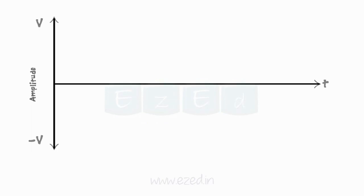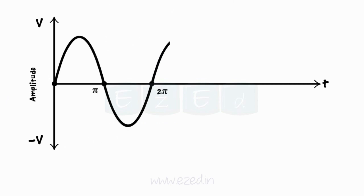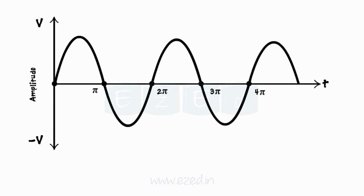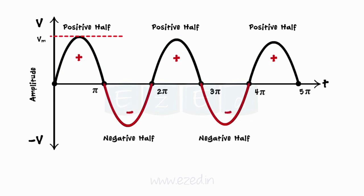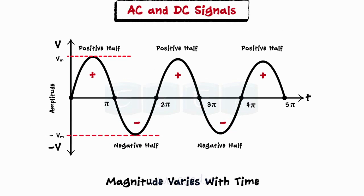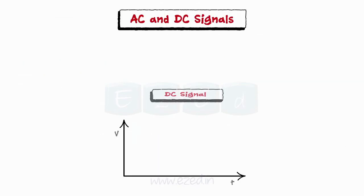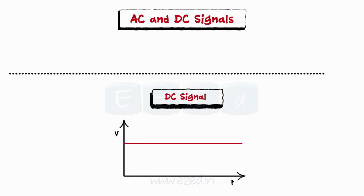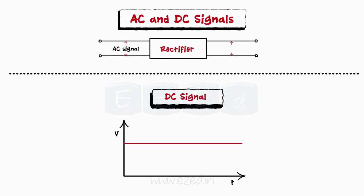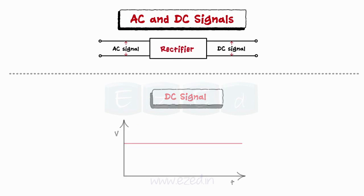Let's first understand the concept of AC and DC signals. AC or alternating current is a signal that continuously varies in sinusoidal shape with respect to time. When it goes above the zero line, we get the positive magnitude of the signal, called the positive half of the AC signal. When the signal goes below the zero line, we get the negative magnitude, referred to as the negative half. DC or direct current has a constant magnitude, which is independent of time. So let's see how to convert the varying AC signal into a constant DC signal using rectifier circuits.